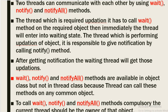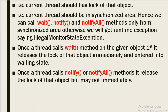Wait, notify, and notifyAll methods are available in the Object class, not in the Thread class, because a thread can call these methods on any common object. To call wait, notify, or notifyAll, the current thread must be the owner of that object — that is, the current thread must hold the lock of that object. The current thread must be in a synchronized area, either a synchronized method or synchronized block. Otherwise, we will get a runtime exception: IllegalMonitorStateException.